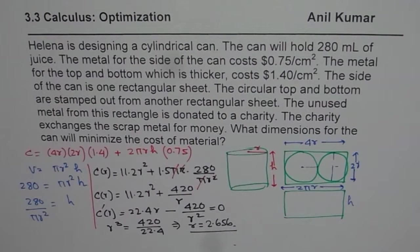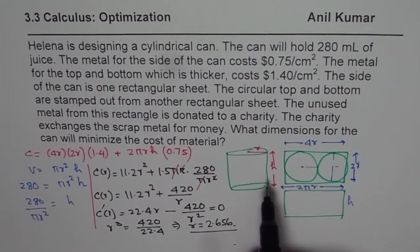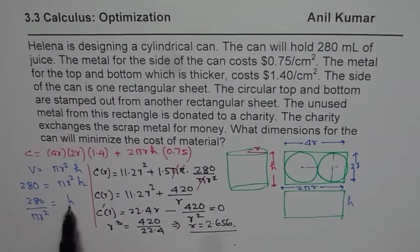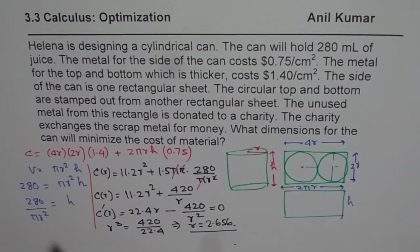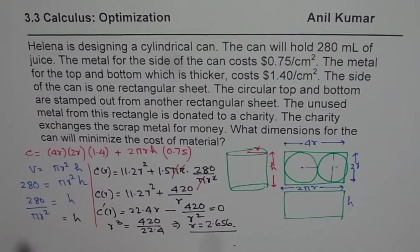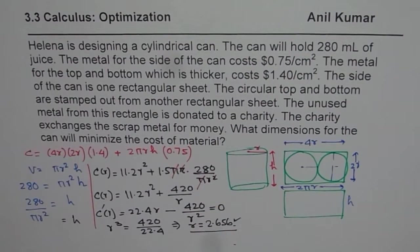So you get R as 2.656. So that gives you the minimum area for the whole thing. So the dimensions now you can figure out. Since R is known to you, you can substitute the value of R, find H. So that is first thing. So find H, replace R with this value. That is what you have to do, one thing.